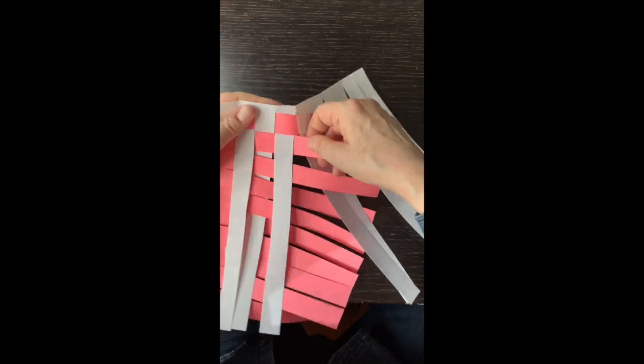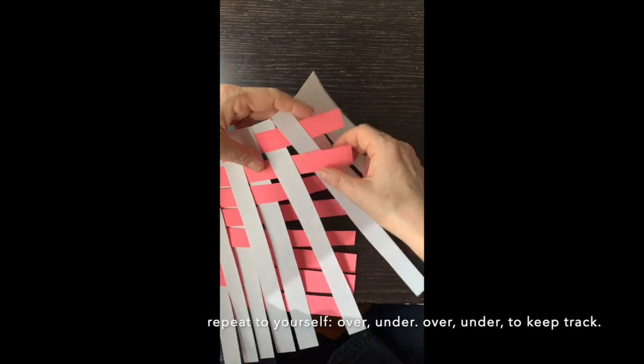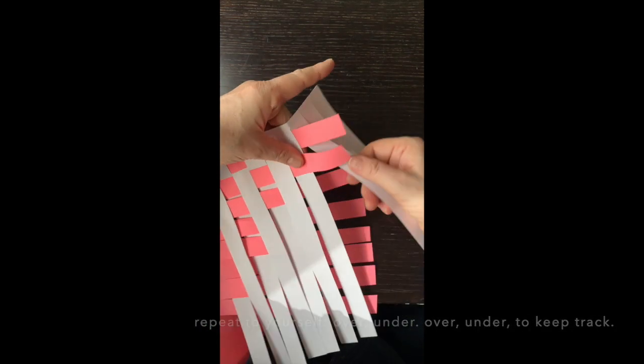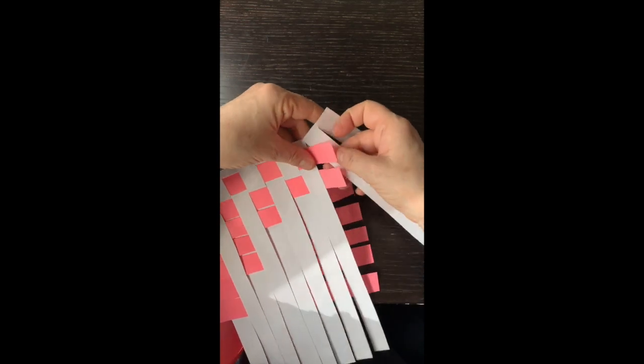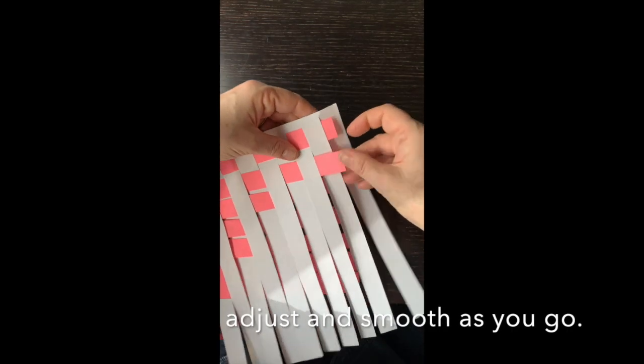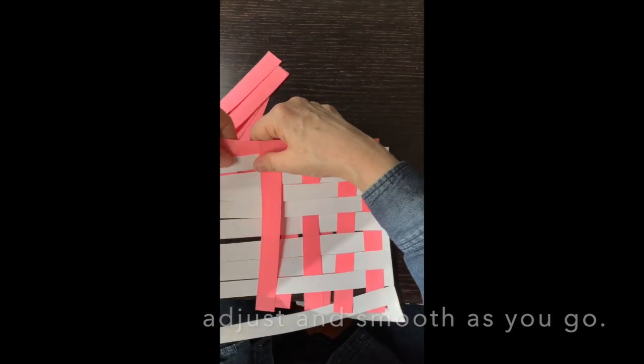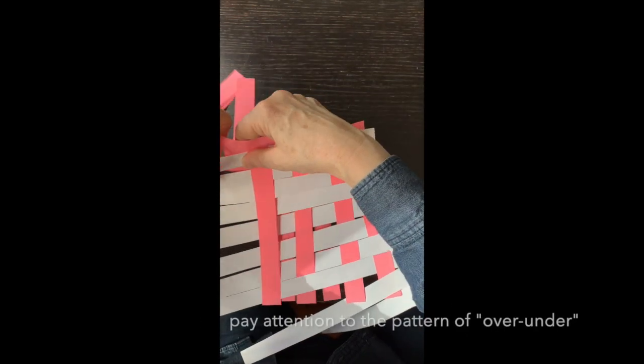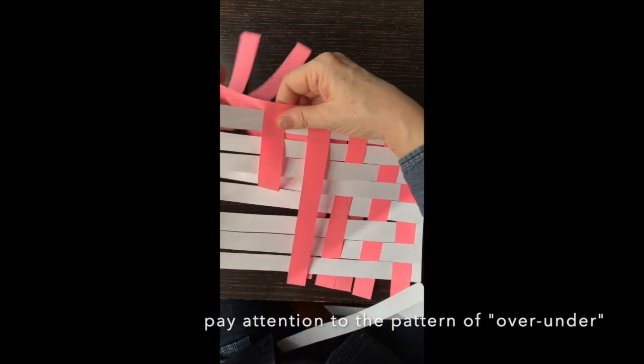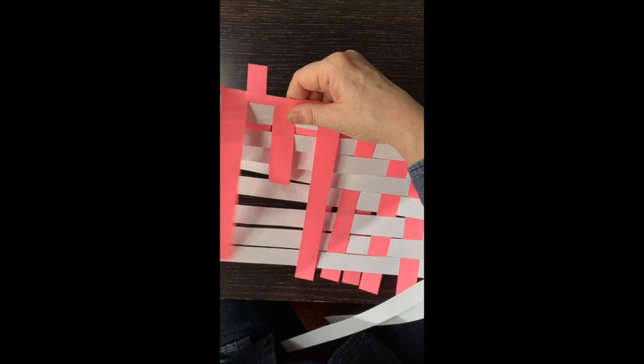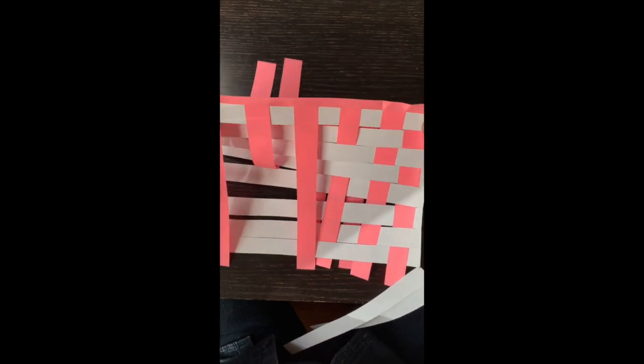Repeat to yourself: over, under, over, under, to keep track. Adjust and smooth as you go. Pay attention to the pattern of over, under to make a nice plane weave. Move slowly and breathe.